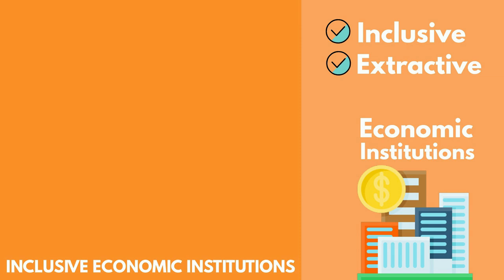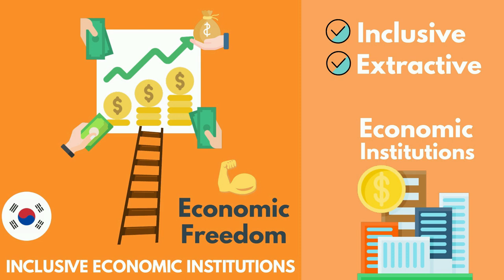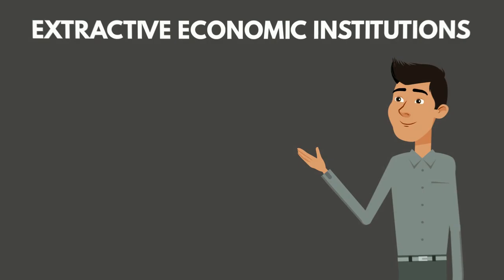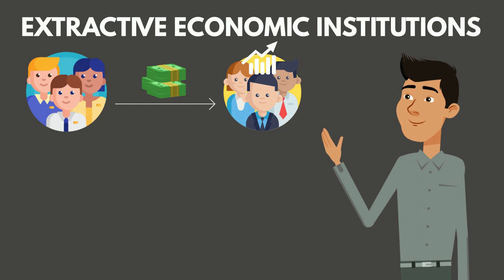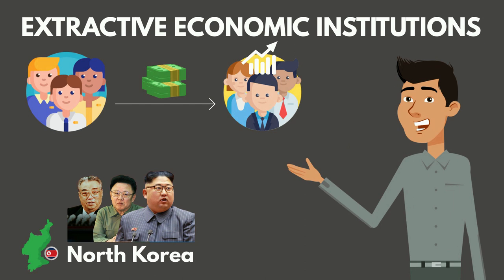This includes things such as public services, property laws, and access to financing. A country can have either inclusive or extractive economic institutions. Inclusive economic institutions pave the way for economic success because they encourage citizens to participate in economic activities — they are strong in economic freedom. Examples include South Korea and the USA, where the economy benefits from private property laws, developed banking sectors, and strong public education. This system encourages people to work hard and be creative because they know their efforts will bring wealth.